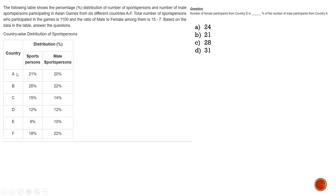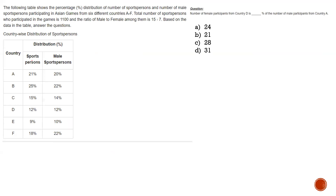There are 6 countries — A, B, C, D, E, F — and there is a sports person distribution across those countries. The total number of sports persons is 1100. The ratio of male to female is 15 is to 7. They have given the percentage of sports persons in different countries and the percentage of male sports persons in different countries.